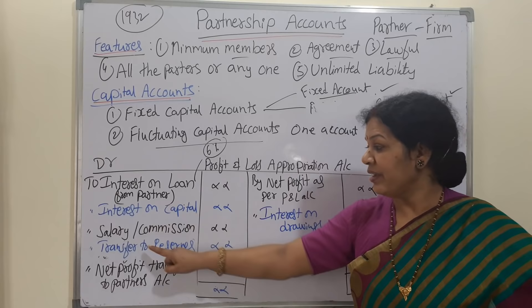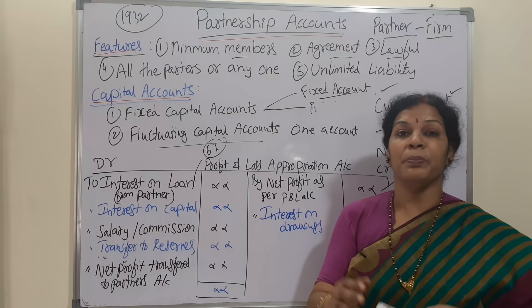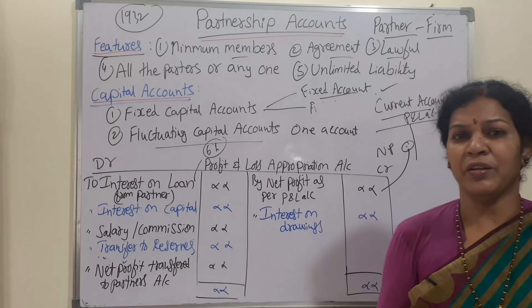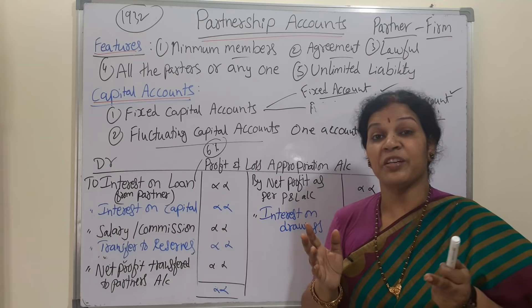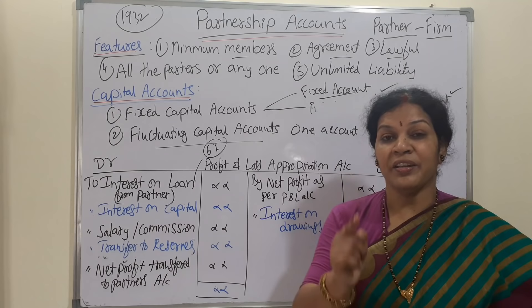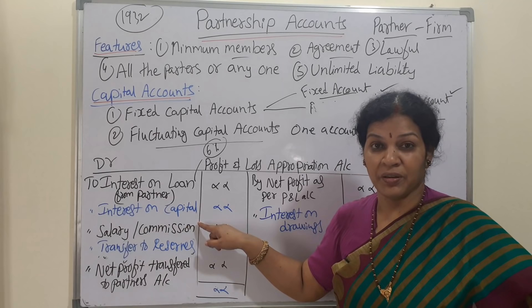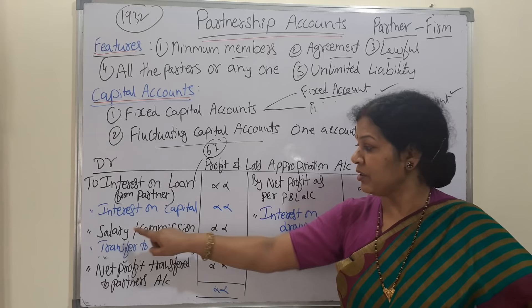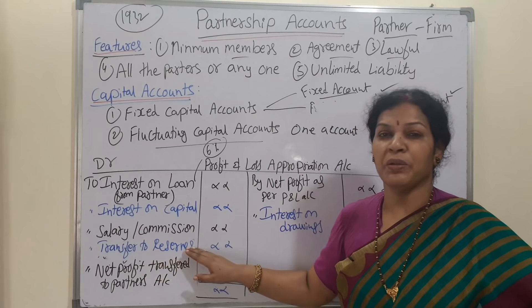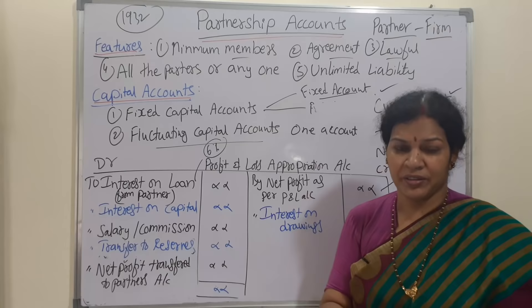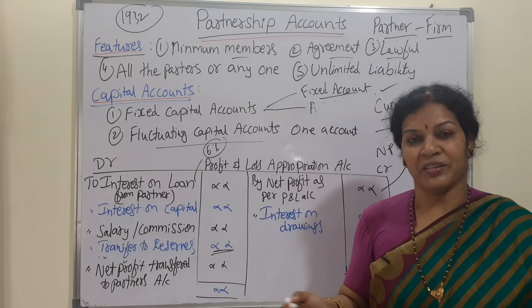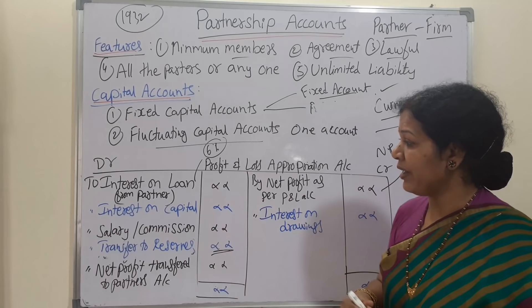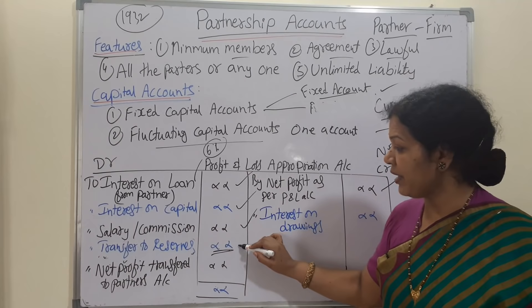Third on the debit side is salary or commission. Sometimes partners may not contribute capital but render services, so we pay them a salary. Sometimes partners are taken on a commission basis. Fourth is the transfer to reserves — out of the net profit, some amount may be transferred to reserves and that comes on the debit side. So we have four transactions on the debit side: interest on loan, interest on capital, salary or commission, and transfer to reserves.